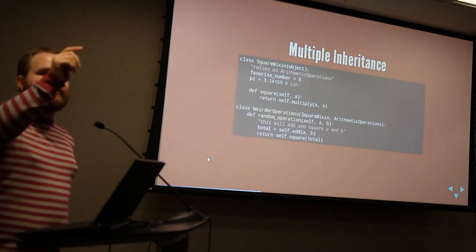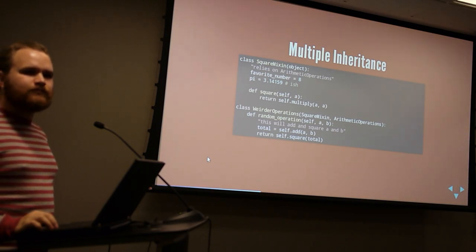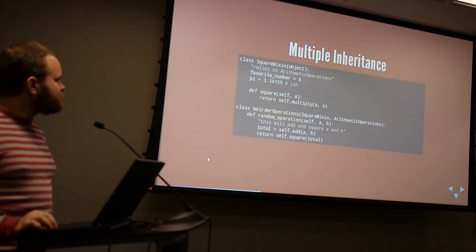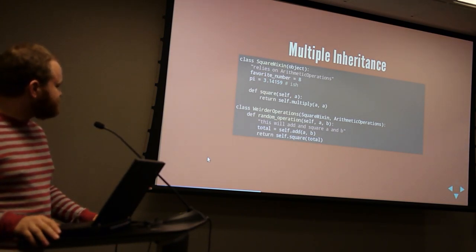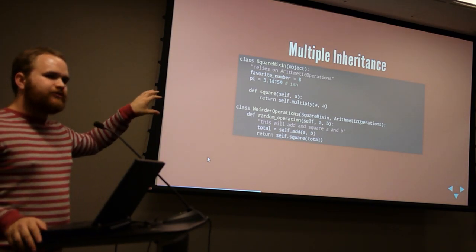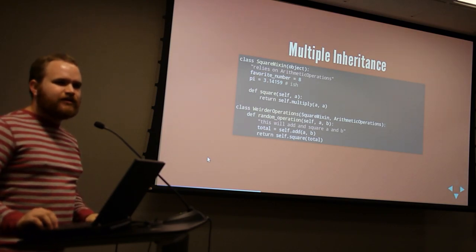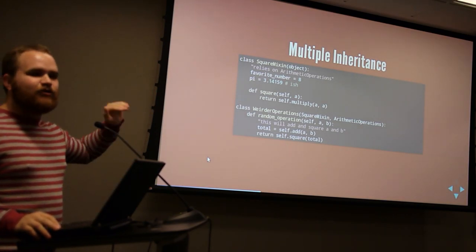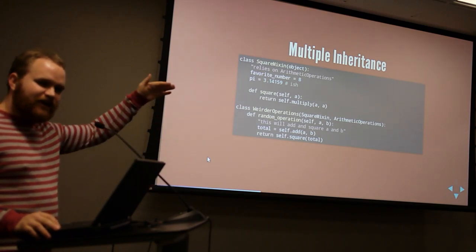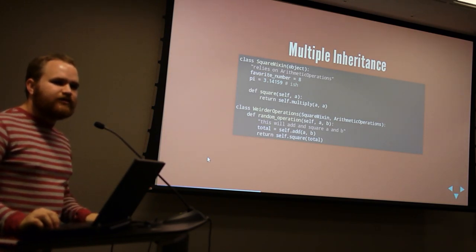What's the advantage of making SquareMixin a mixin instead of having it extend ArithmeticOperations directly? That's a good question. This way, SquareMixin can be used with multiple parent classes that all define multiply — maybe they define it in different ways. But it's just a little bit more separated. In a lot of cases you would probably want to extend ArithmeticOperations further and add another level to the tree rather than going horizontally. They're different situations where each one is a better choice.